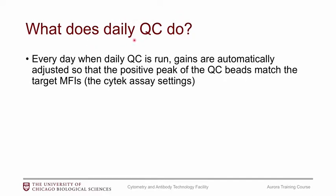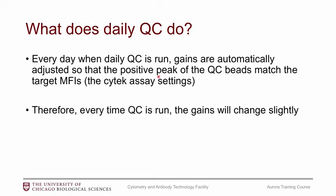For daily QC, when each user shows up to their session on the Aurora, we ask that everyone runs daily QC. When it runs, the gains are automatically set. You take the QC beads out of the fridge, put them in a tube, dilute them a little bit, put them on the machine, click run for the QC module, and it automatically finds where the positive peak is supposed to be and adjusts the gain to match the target MFI. Therefore, every time you run a QC, the gains will change slightly.